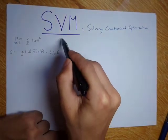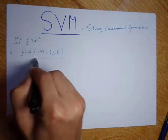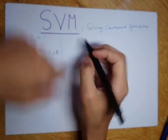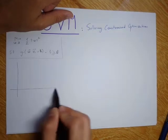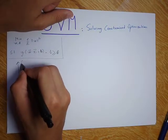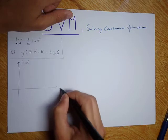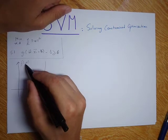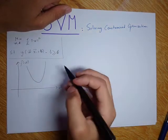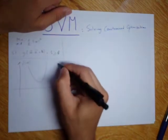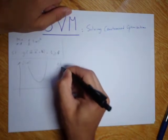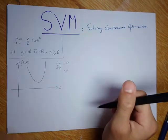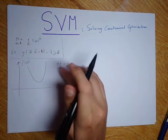First of all, I want you to see a visual interpretation of what a constrained optimization problem is. Say that I have a function of W in this form. If I want to minimize this, I can just compute the derivative with respect to W and find the W that satisfies this equation. But this is a non-constrained optimization problem.